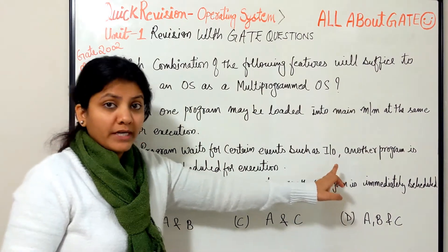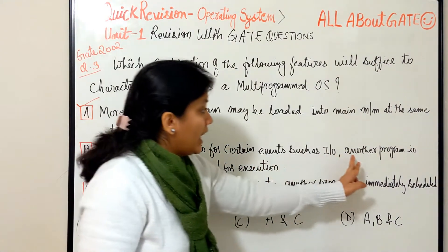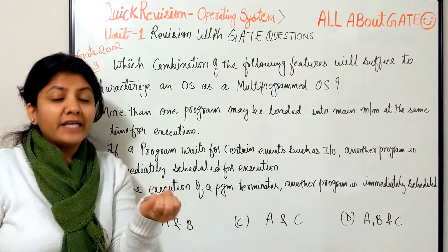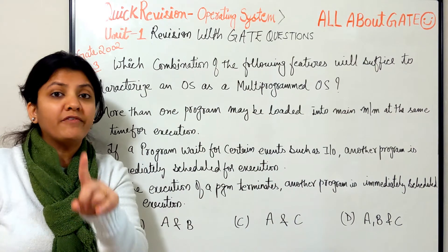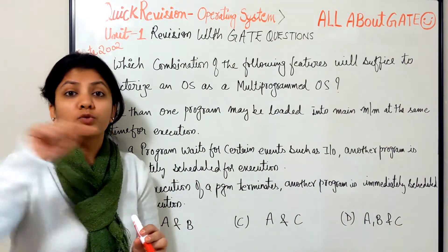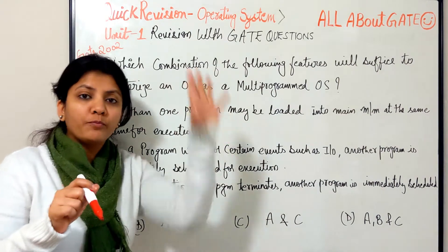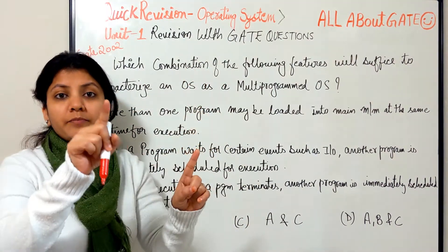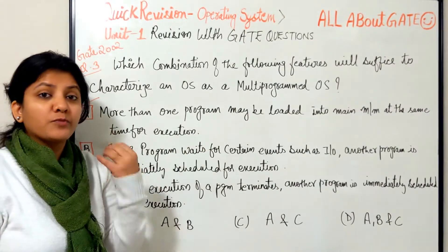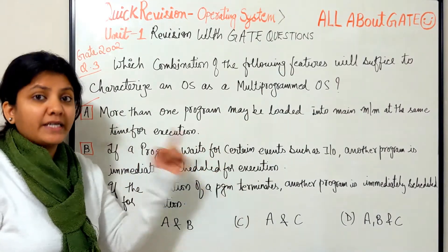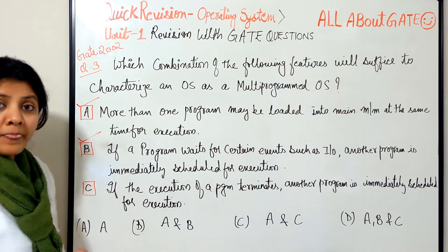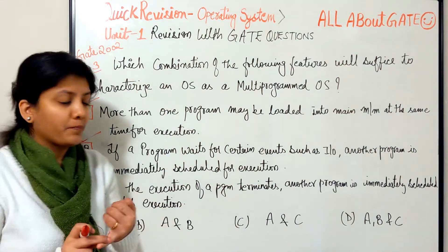Statement 2: if a program waits for certain events such as I/O, another program is immediately scheduled for execution. This is the efficient utilization of the CPU, which is possible only in a multi-programmed OS. In a uni-program system, if P1 goes for I/O, the CPU is idle because there is no other process in main memory to schedule. So statement 2 is also true.